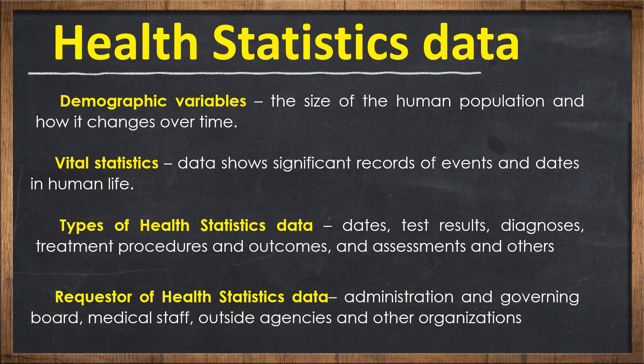Vital Statistics: Data that show significant records of events and dates in human life refer to vital statistics. Some vital statistics that need to be recorded are birth, death, marriage, mortality, and morbidity. Types of health statistics data include dates, test results, diagnosis, treatment procedures and outcomes, and assessments.